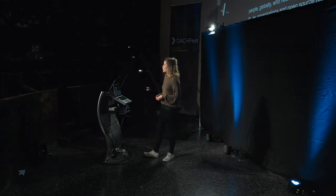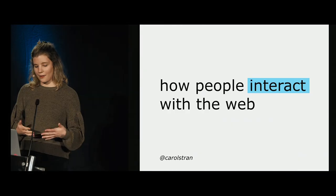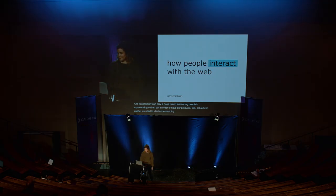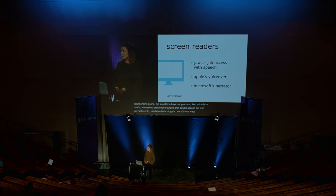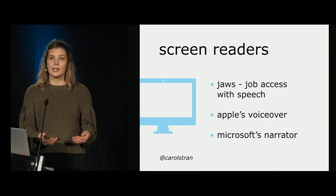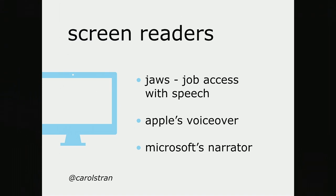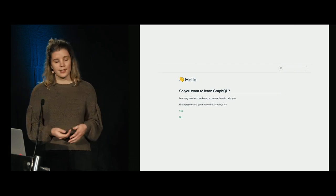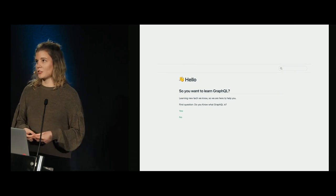Accessibility can play a huge role in enhancing people's experiences online. But in order to have our products actually be useful, we need to start understanding that people access the web very differently. Assistive technology is one of those ways. One of the most talked-about forms is the screen reader — software that takes in information on the screen and produces a Siri-like voice output, audio signals, or even Braille. Let's see how a screen reader would consume this page.